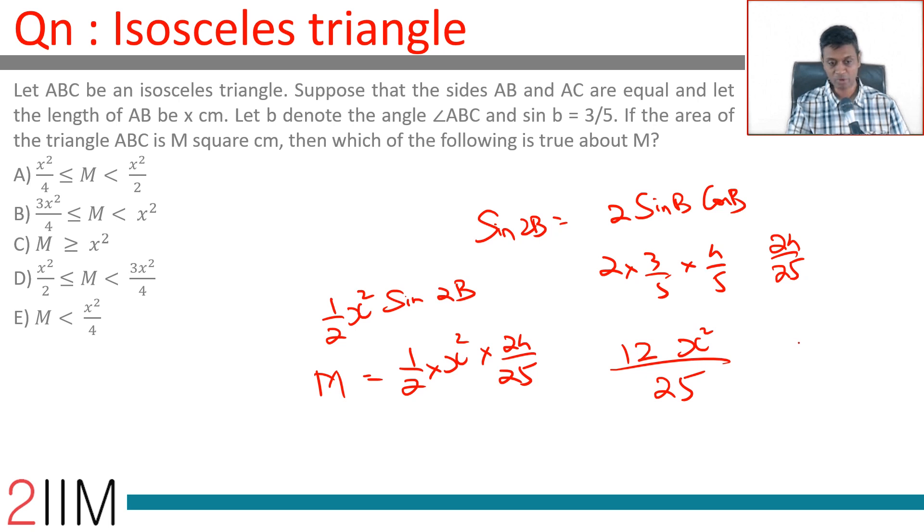And so M sits between X square by 4 and X square by 2. Yeah, that is right. It is less than X square by 2.